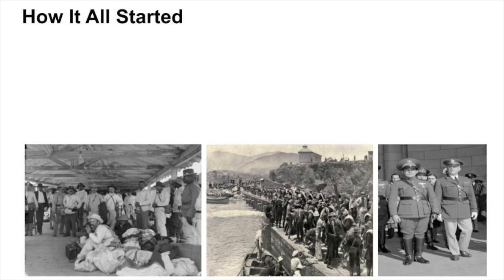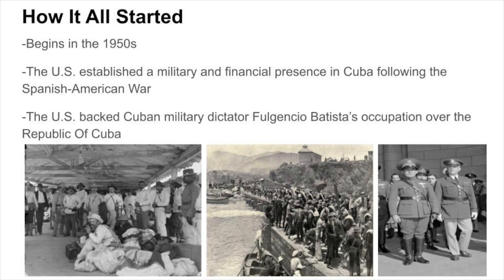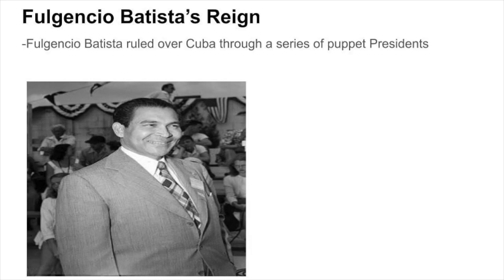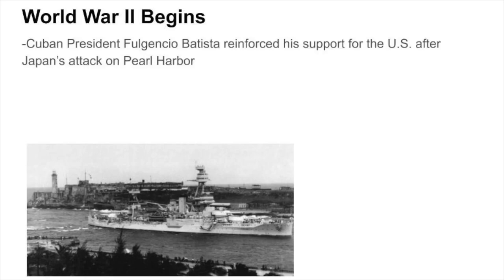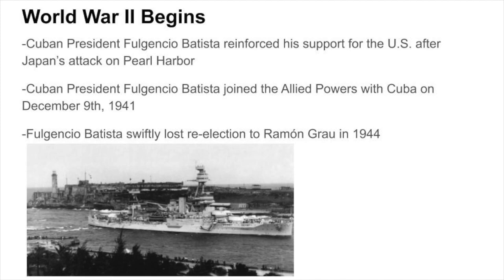The story behind the assassination attempts originated back in the 1950s after the United States first established a military and financial presence in Cuba following the Spanish-American War. The U.S. attempted to expand their control over the Republic of Cuba by backing Cuban military dictator Fulgencio Batista's occupation of the territory. Batista ruled over Cuba through a series of puppet presidents and then was later elected president of Cuba himself. During World War II, President Batista reinforced his support for the U.S. after Japan's attack on Pearl Harbor by joining the Allied powers with Cuba on December 9, 1941. Unfortunately for Batista, he swiftly lost re-election to Ramón Grau in 1944.